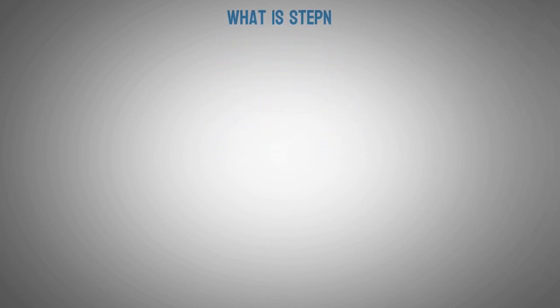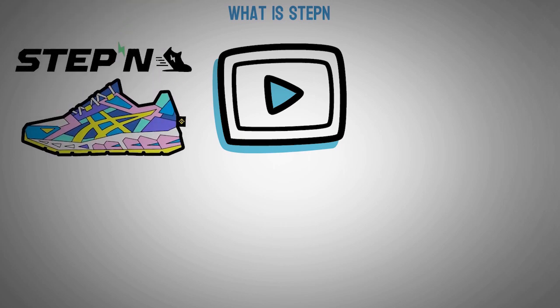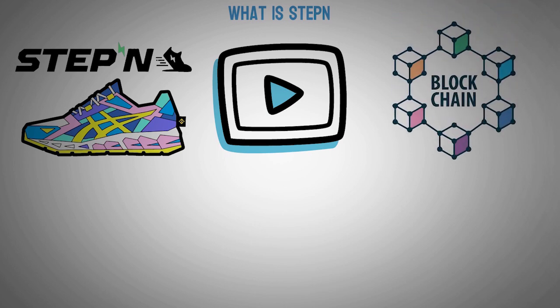First, let's take a look at what is STEPN. STEPN is very similar to Sweatcoin, which we discussed in the previous video. You can go check that out as well. Coming back to the topic, STEPN is a move-to-earn app. A major difference is that this one operates on the Solana blockchain. In simple words, you earn crypto for running, jogging, or even walking.